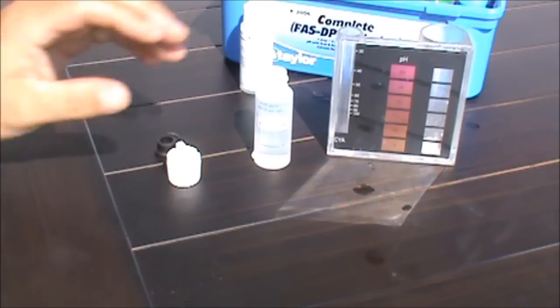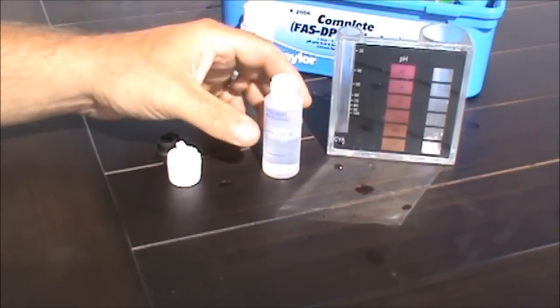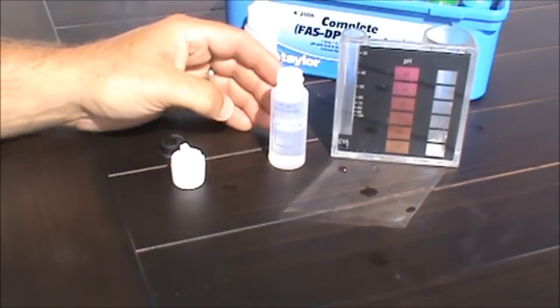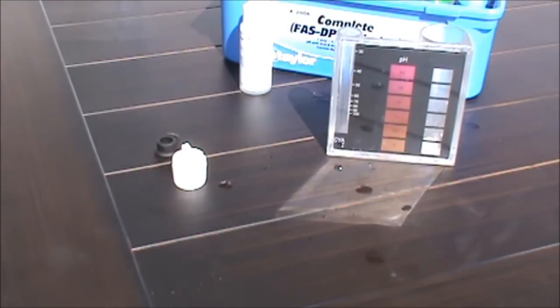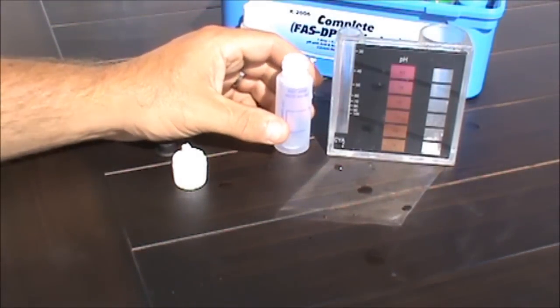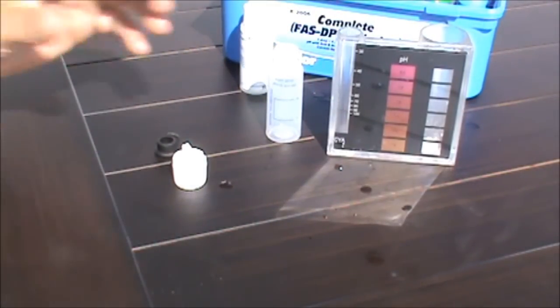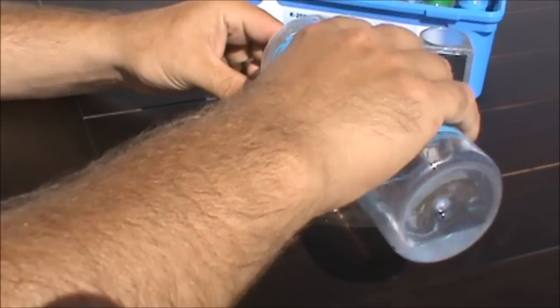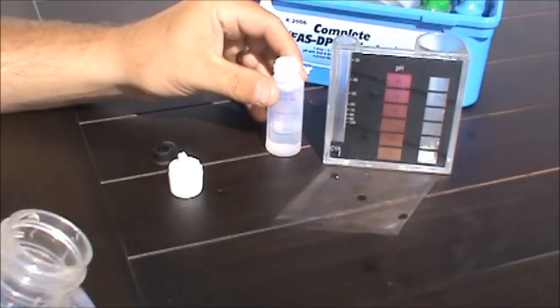Here's how you test it. First, take the little bottle for the CYA test and rinse it out. I put some sample water in it and just cleaned it out. Next, we have to fill this thing up to the 7 milliliter mark. I'm going to carefully fill it up to exactly 7 milliliters.